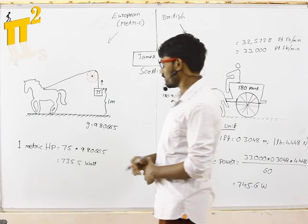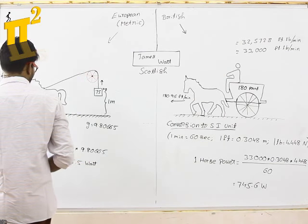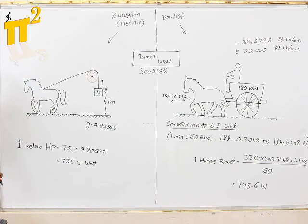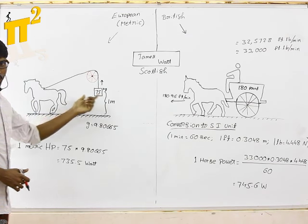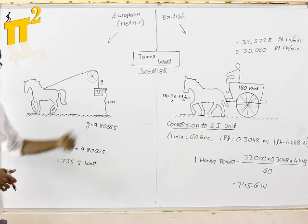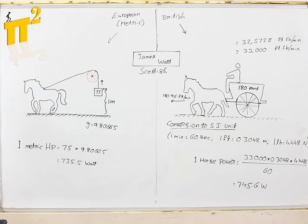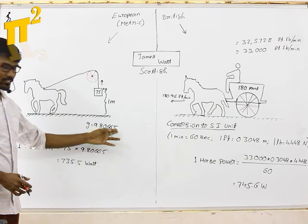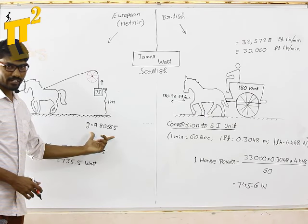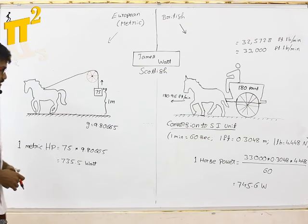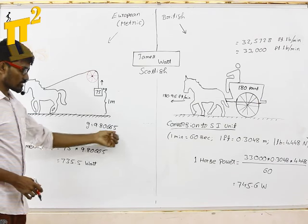Later on, if you consider metric system, he had to compare again the power of engine with the horse lifting 75 kilos weight to a height of 1 meter against the gravity 9.80665. As we know, gravity changes from different locations, so he has taken standard acceleration gravity which is 9.80665.